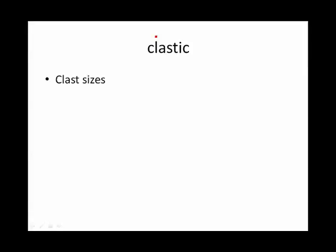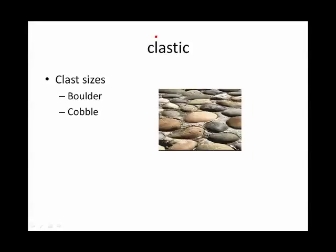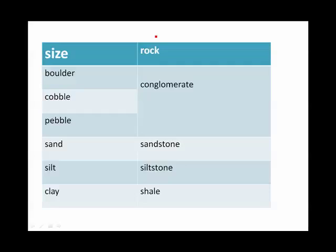Clastic sedimentary rocks are made of pieces of other rocks. We categorize the pieces by their sizes. You could have a boulder or a cobble — a cobble would be the size of a softball. Then there's pebble, sand, silt, which is very fine sand, and clay, the finest of all — so fine that it is powdery. If you have particles larger than sand, you get a conglomerate; sand only makes sandstone; then siltstone; and from clay, you have shale.